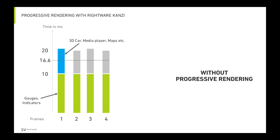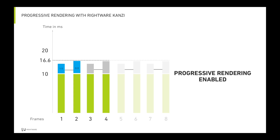Now, let's enable progressive rendering with Kanzi. We've now enabled progressive rendering for the content in the blue bar, and distributed the rendering of that content across two frames. Now, the green part continues to be drawn at full speed, while the blue part renders a bit slower.